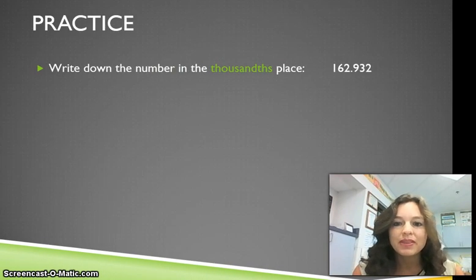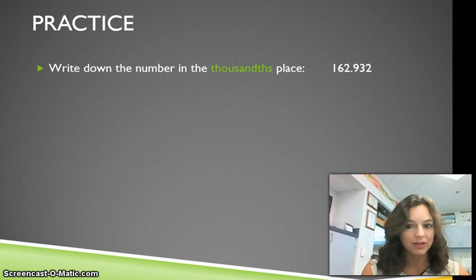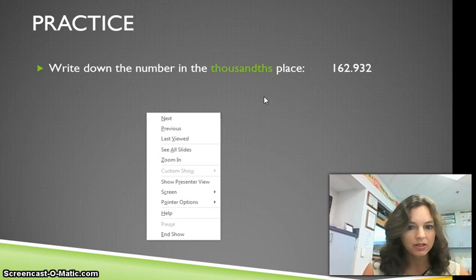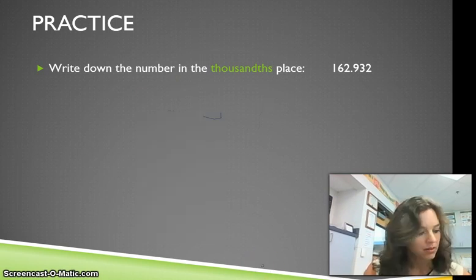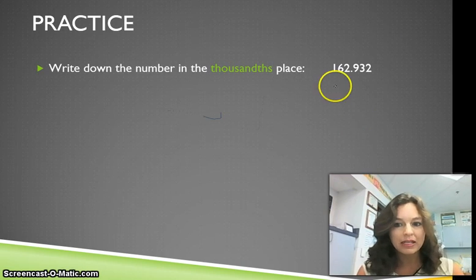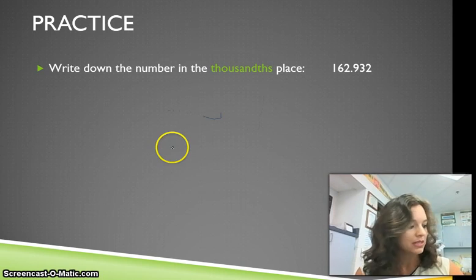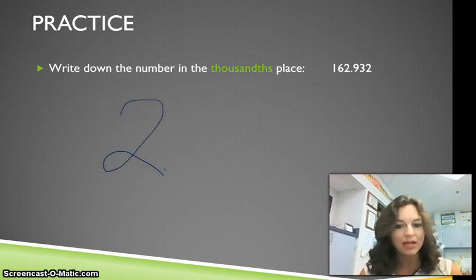Now we want to write down the number in the thousandths place. Here we have the number 162 and 932 thousandths. We have a 1 in the hundreds place, a 6 in the tens place, a 2 in the ones place, a 9 in the tenths place, a 3 in the hundredths place, and a 2 in the thousandths place. So the number we should write down is 2 because that is the number in the thousandths place.